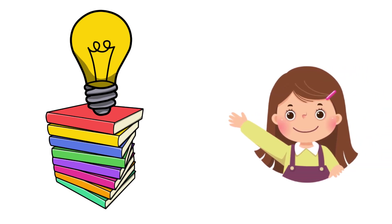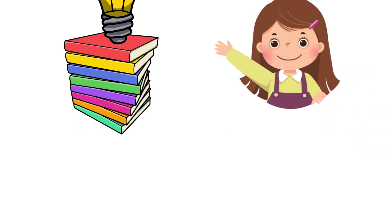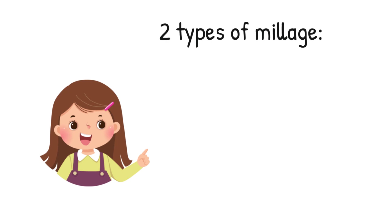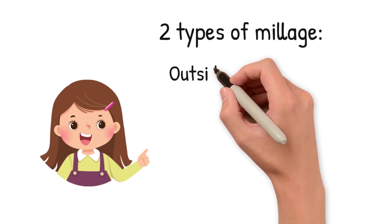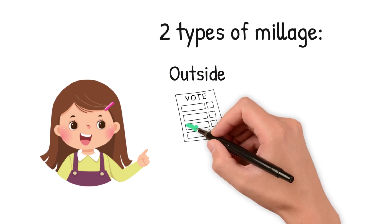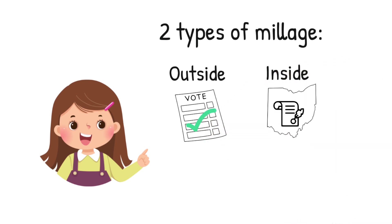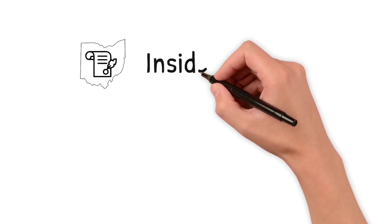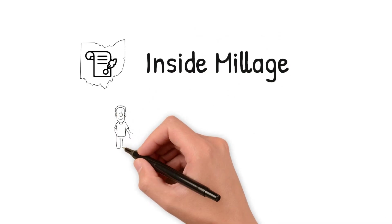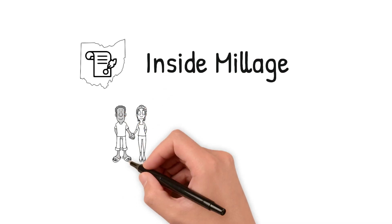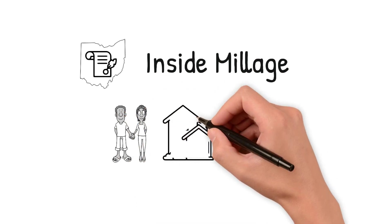That means I went out and learned about millage and property valuation. Did you know there are two types of millage? Outside millage is what our taxpayers approve when they vote. Inside millage is actually written into the Ohio Constitution.